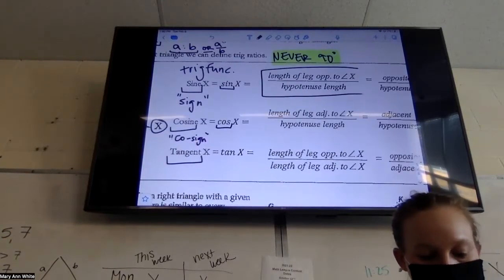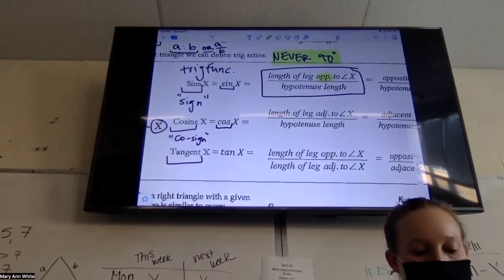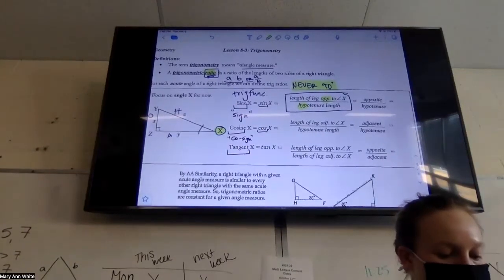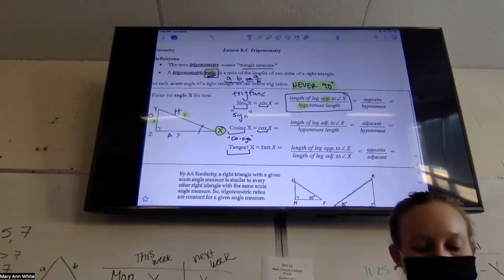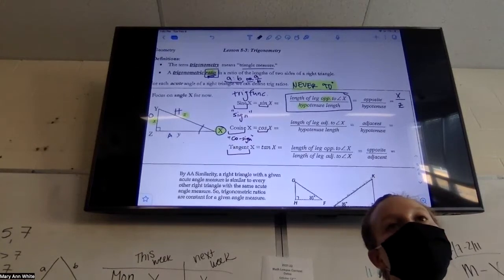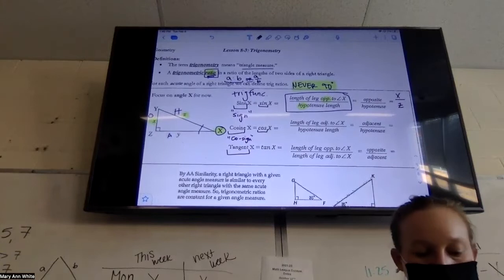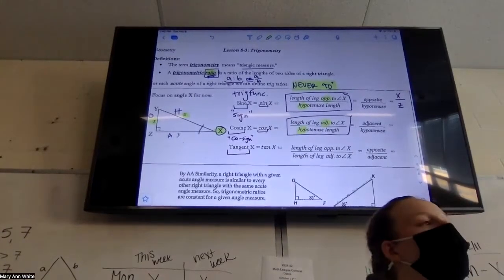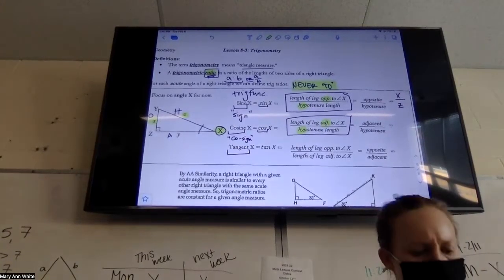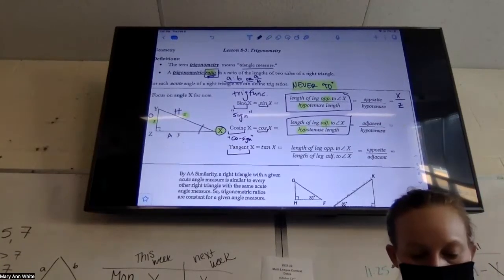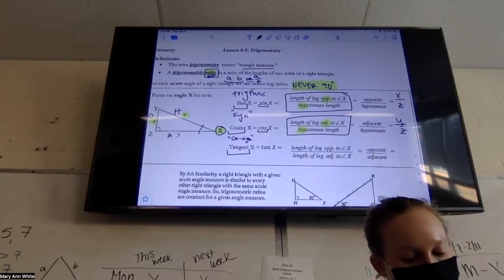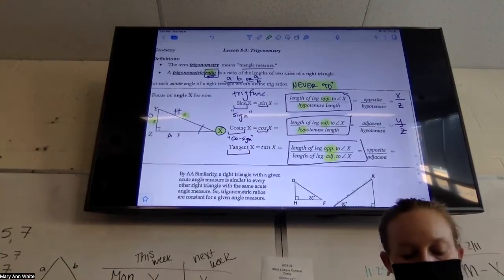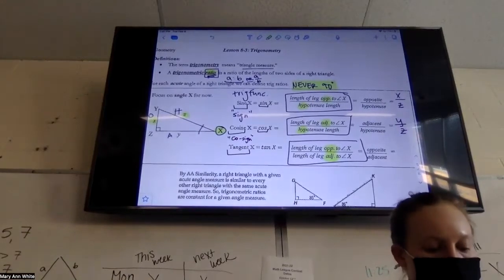Sine, cosine, tangent are the three basic trig functions I'm going to teach you at this level. They are a ratio, a fraction. Sine is a fraction of the length of the leg opposite to angle X divided by the length of the hypotenuse. So sine is your opposite over your hypotenuse. Based on the picture we labeled, my opposite is X and my hypotenuse is Z, so my ratio here would be X over Z. Cosine is the length of the leg adjacent to angle X divided by the hypotenuse. What's the adjacent side on our picture? Y. What's the hypotenuse? Z. So my cosine would be Y over Z.